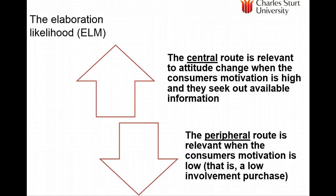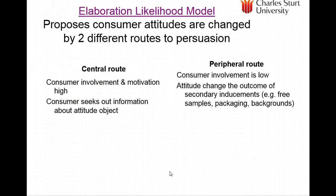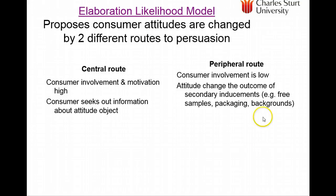The elaboration likelihood model is another way attitudes can be changed, as it alters how we construct messages. In the central route, where people are highly involved, consumer motivation is high and they seek out information — this drives the cognitive part of attitude change. In the peripheral route, we work more on the emotive part because there's low involvement and people won't actively search for information. There are different attitude strategies based on elaboration likelihood, as shown in some YouTube examples.